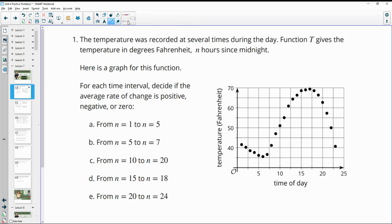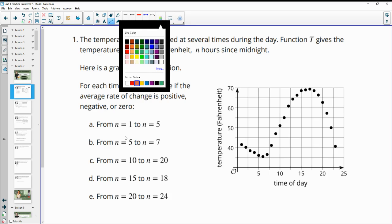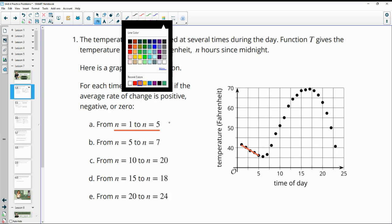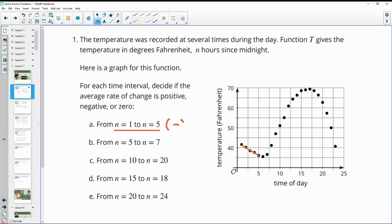So this first interval that we're looking at, we want to go from n equals 1 to 5. So n equals 1 is probably this dot right here. We go to 1 and go up, and then 5 is this dot. So I'm just connecting the n equals 1 to the n equals 5. And then we want to look at the slope of that line. Remember that we read a slope like we read a book, from left to right. And this line is going down, so this one is going to have a negative rate of change.